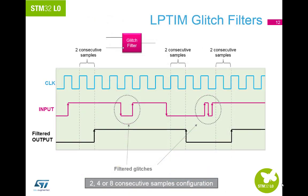The glitch filters protect either external or internal inputs with digital filters that prevent any glitches or noise from propagating inside the low power timer, in order to prevent spurious counts or triggers. Before activating the digital filters, an internal clock source should first be provided to the low power timer. This is necessary to guarantee proper operation of the filters.